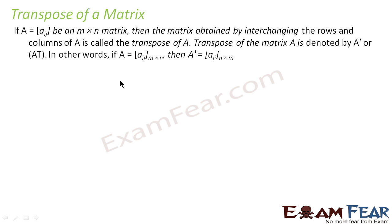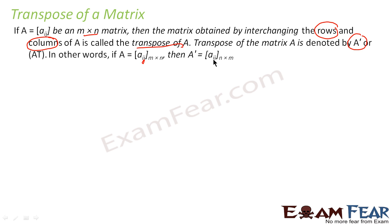Now we'll learn the transpose of a matrix. What is the transpose of a matrix? If there's an m×n matrix, a new matrix is obtained by interchanging rows and columns — making rows as columns and columns as rows. The new matrix obtained is called the transpose of a matrix, denoted by A'. Mathematically, if A = [aij] of order m×n, then A' = [aji] and it is of order n×m. So m×n becomes n×m.